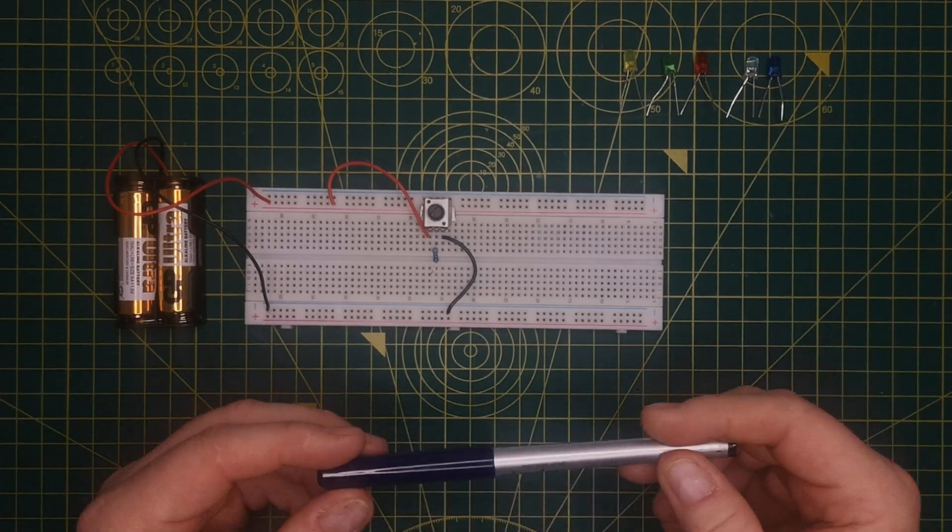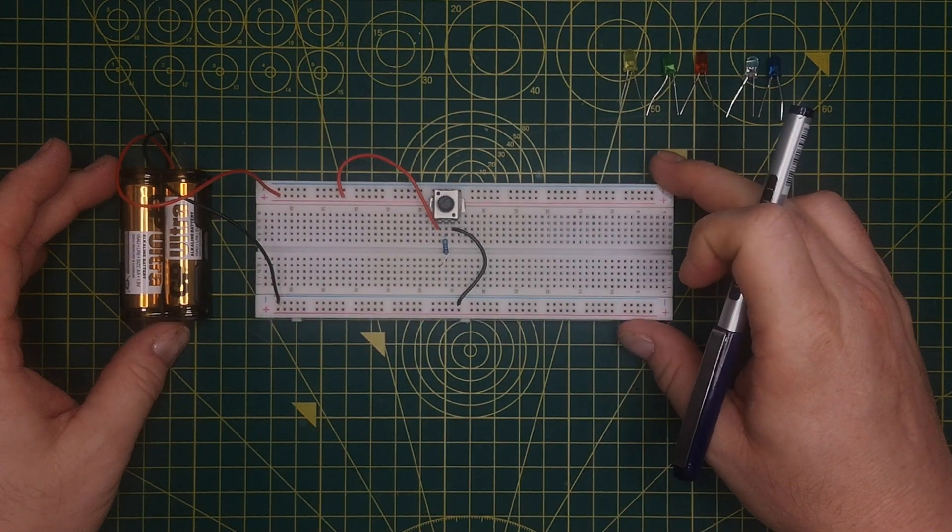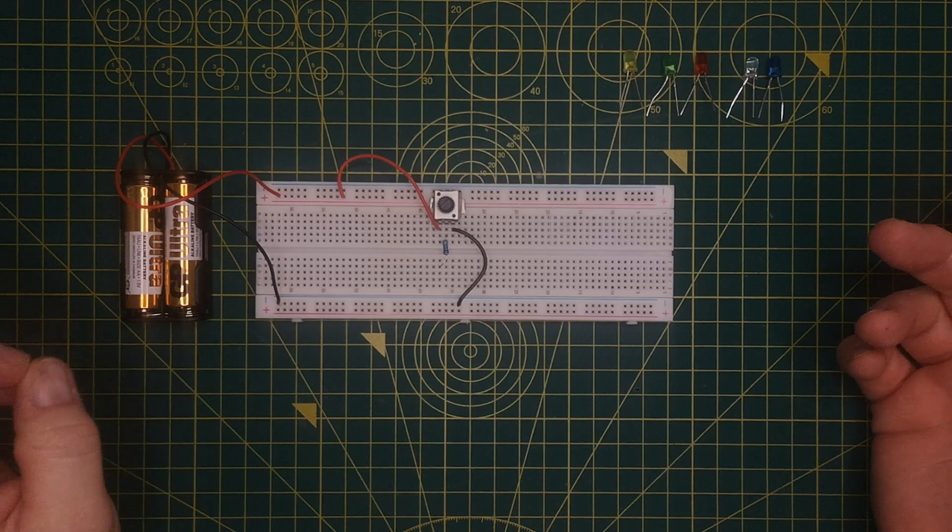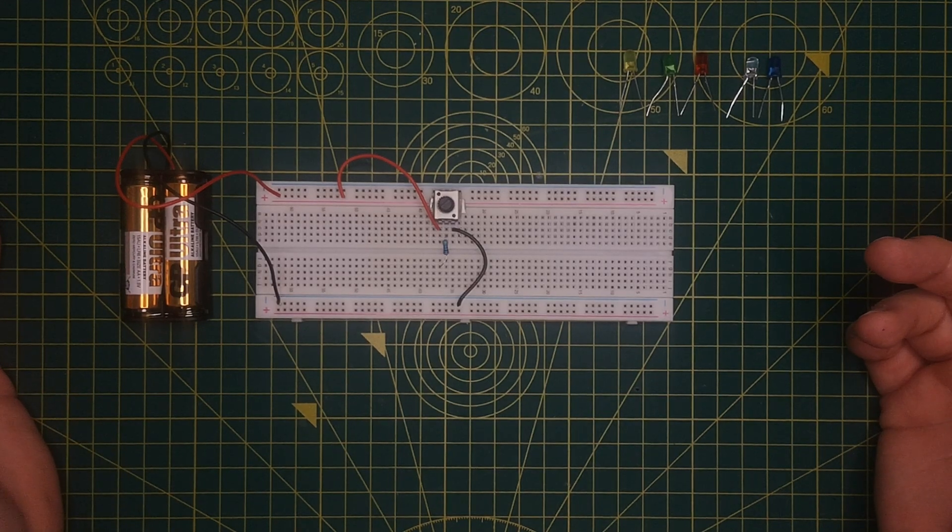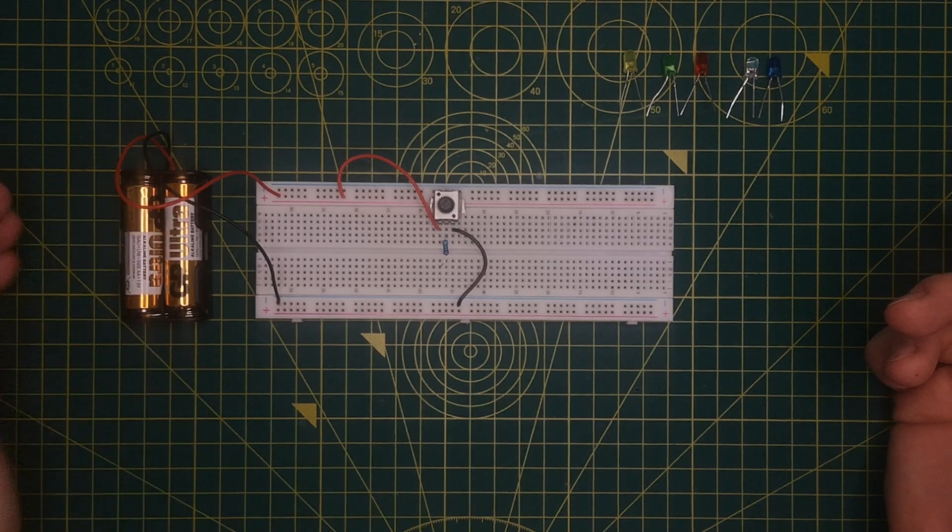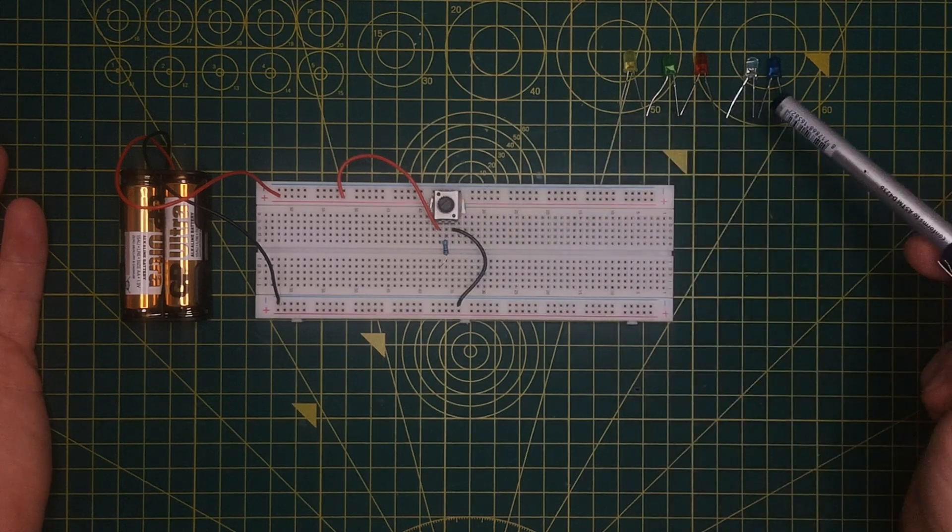The reason this video has come about is that you can buy this kind of equipment from education supply companies and they often cost £40, £50, £60 for one piece of equipment. And essentially all that's in the box is a voltage, a power source, a potential divider and some LEDs.